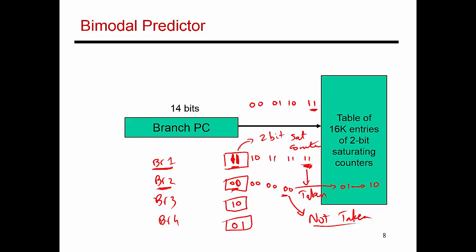So when I see branch 1 next, I'm going to look at the counter value. This is strongly biased as taken, so I'm going to make a prediction that branch 1 on its next execution is also going to be taken. I look at branch 2, it has a counter value of 0, 0. This is strongly biased as not taken. So the next time I see branch 2, I'm going to make a prediction that this is not taken.